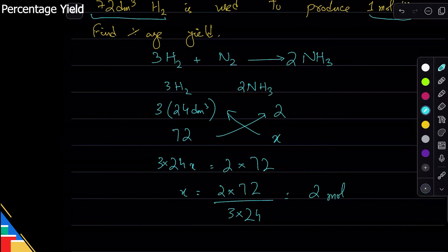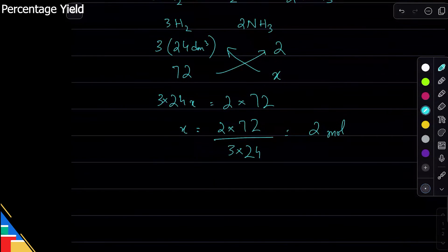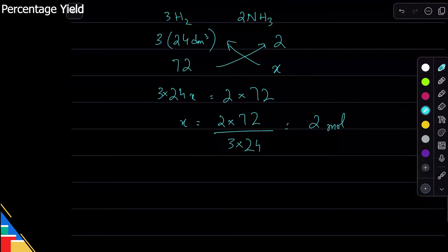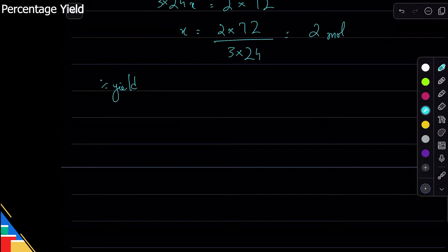So I should be getting two moles. What did I actually get? One mole. So now I use the formula, or I can use the ratio. The formula is percentage yield equals what you got, which was one mole, which is basically the practical or experimental, over theoretical times 100 percent. So I got one, I should have gotten two, times 100 percent. That means my yield is 50 percent.